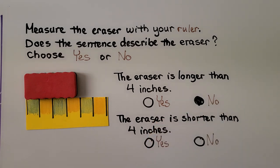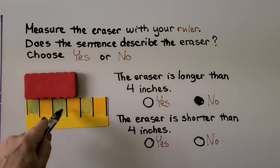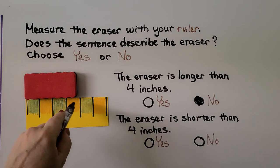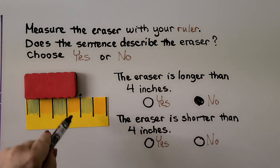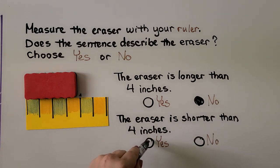This sentence says the eraser is shorter than four inches. We know that's one, two, three, four inches. So if it was up to here it would be four inches and it's not quite. So it is shorter than four inches. That's a yes. And our ruler helped us.